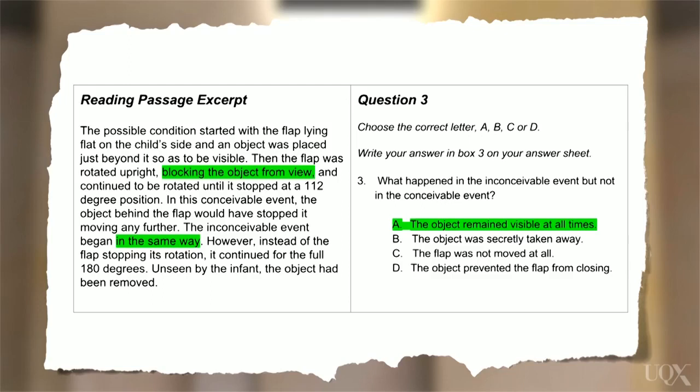So that means that A can't be right, because the object was not visible at all times. We could check the other options in the same way. Then we can be sure that the answer is B, and we can write this letter on the answer sheet.